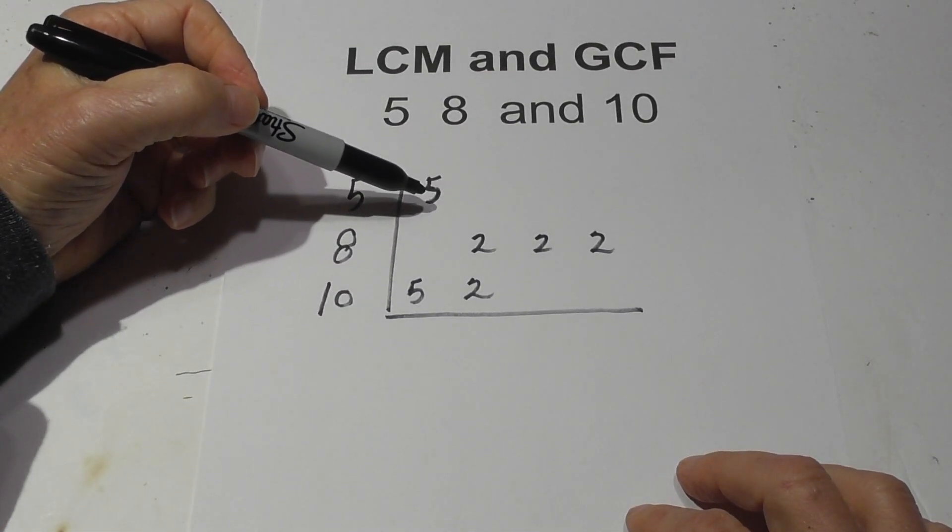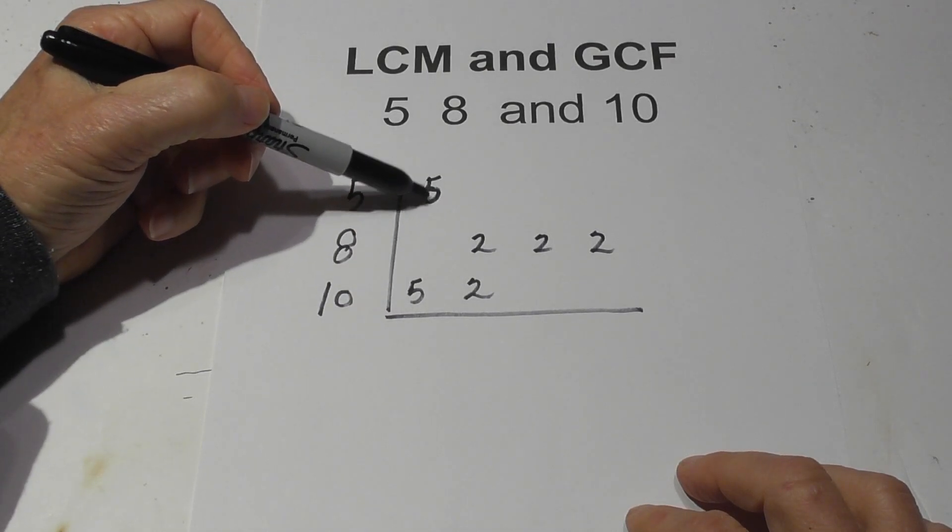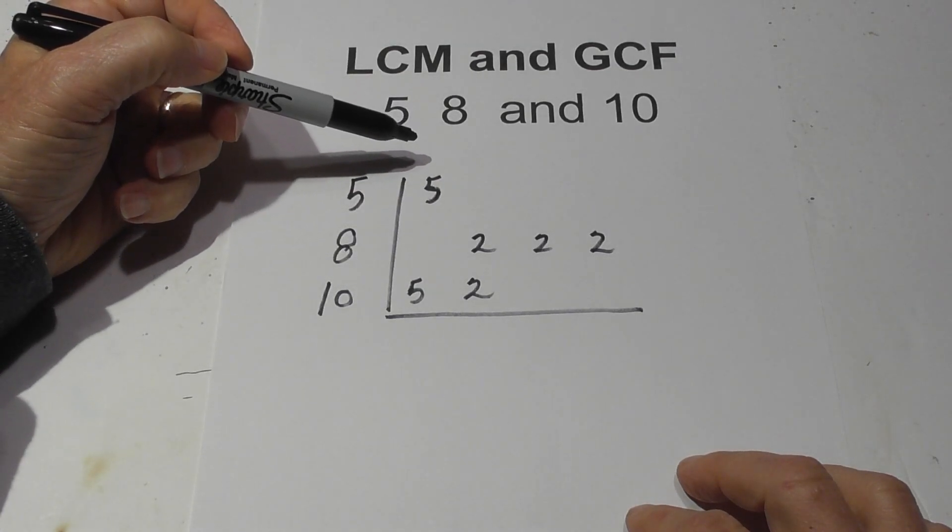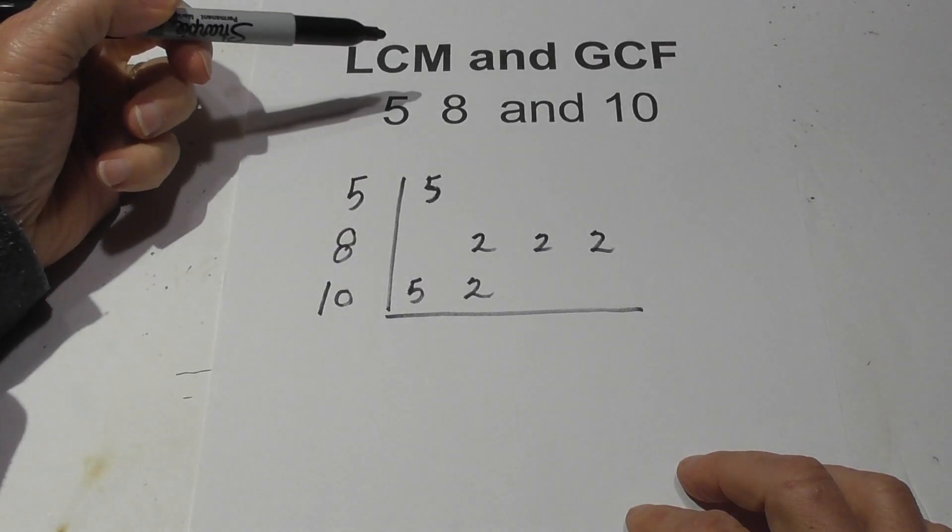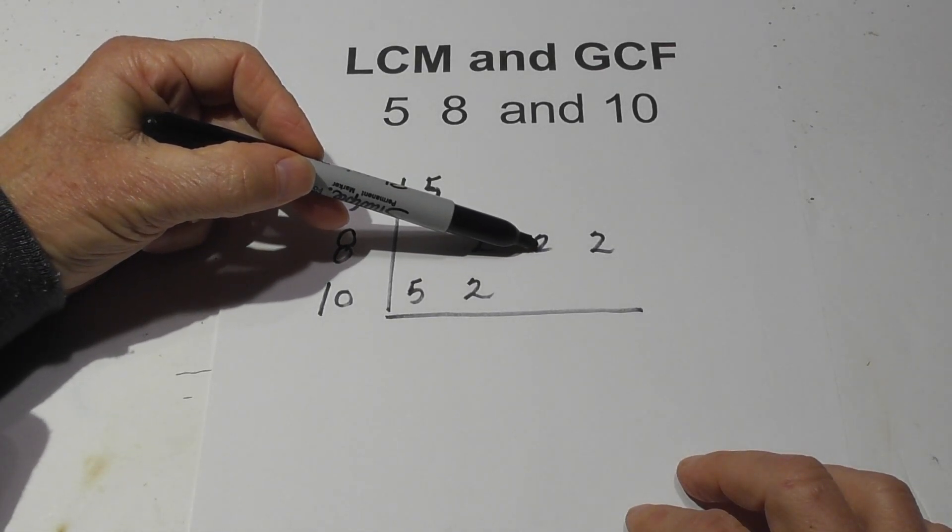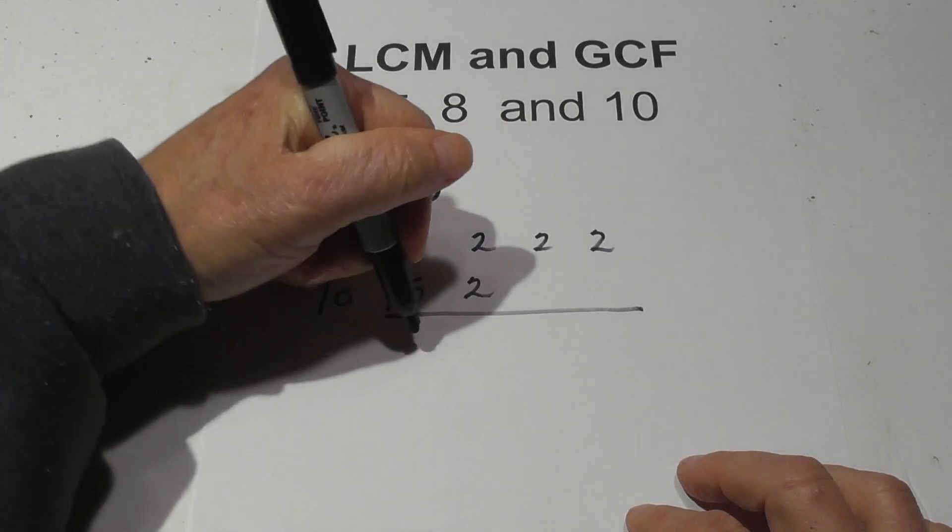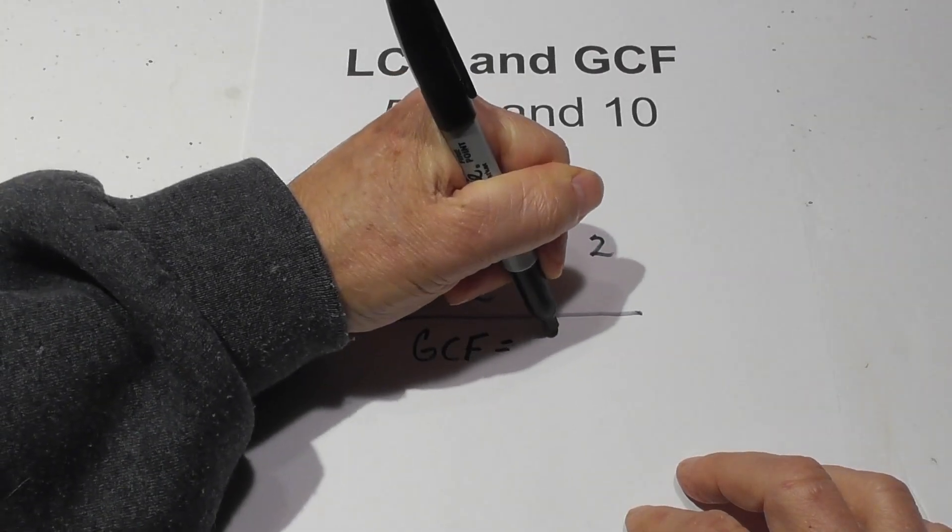You need to look for 3 of the same number, or 3 numbers in a column. This column has 2, so I'm not going to bring down the 5. This column only has 2 2s, so I'm not going to bring that down. This column only has 1, so if you do not have any groups of 3, the GCF equals 1.